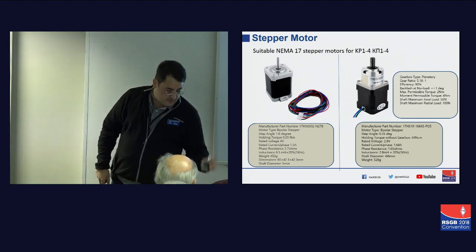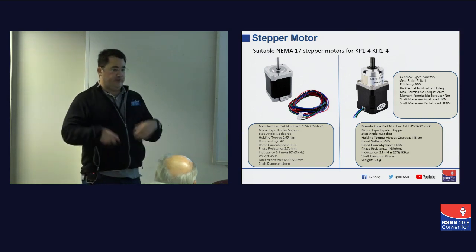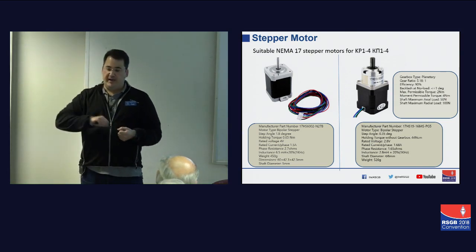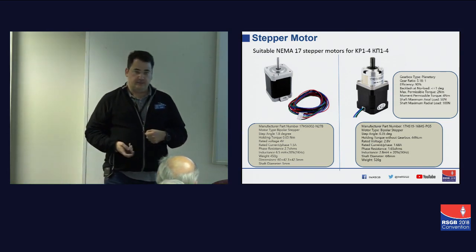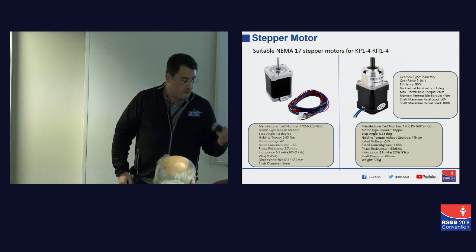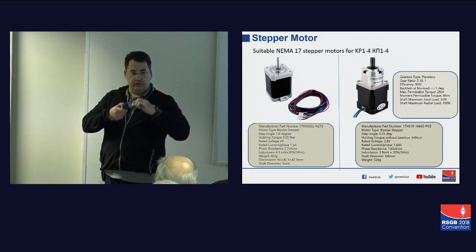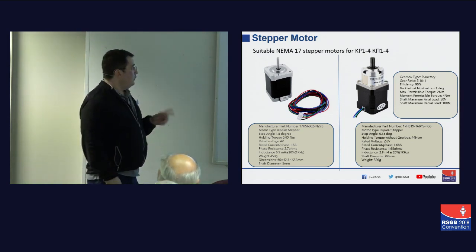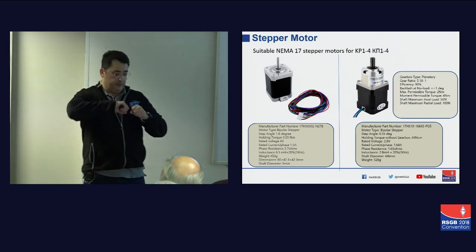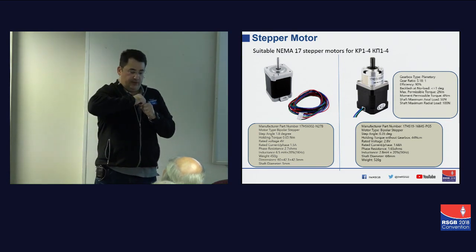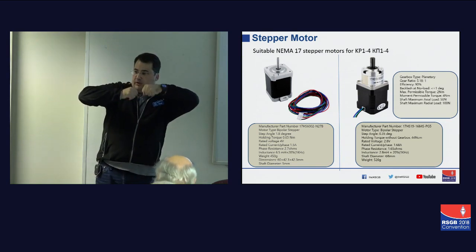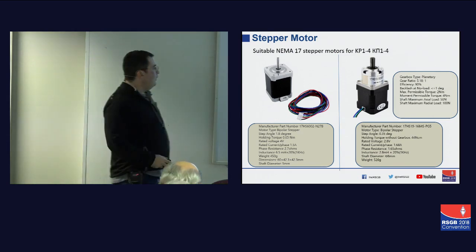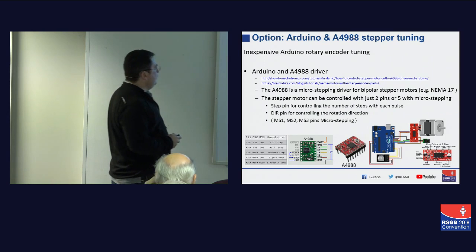If you use a planetary gearbox 5-to-1, you're probably going to have to wait for the loop to get to speed because it's going to be a fifth of the speed for the tuning — what you gain in torque you lose in speed. You also don't want to operate these too fast because the holding torque goes down and the stepper motor starts skipping. And there's the issue of slop — as you're turning in a given direction, when you start tuning the loop in the opposite direction, you've got slop in the shaft. The loop tuner we're going to talk about will compensate for that.